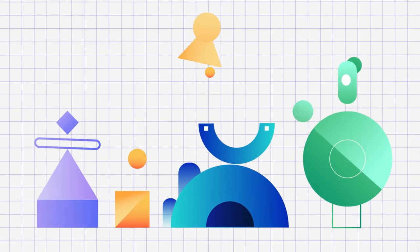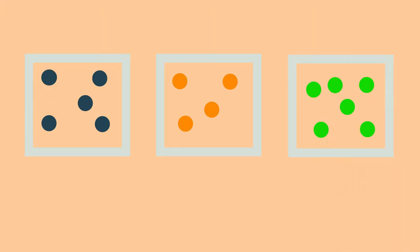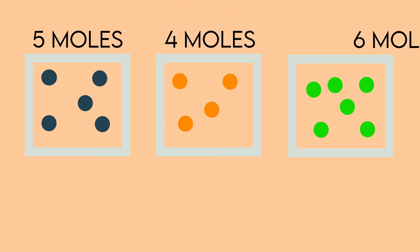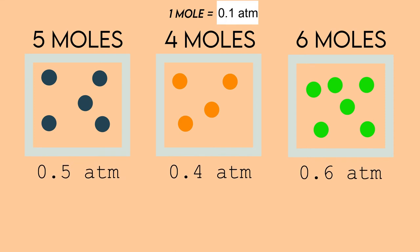Let's remember that pressure is directly proportional to the number of moles, and that is derived from the formula of the ideal gas law. So we're going to have three containers again: five moles of blue gases in one container, four moles of orange gases, and six moles of green gases.